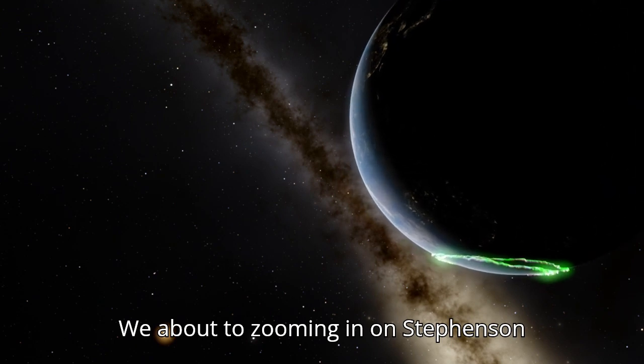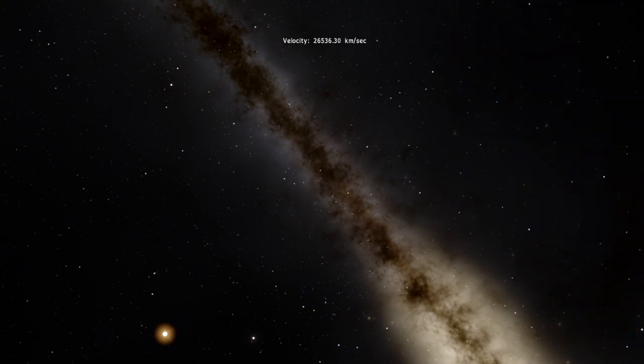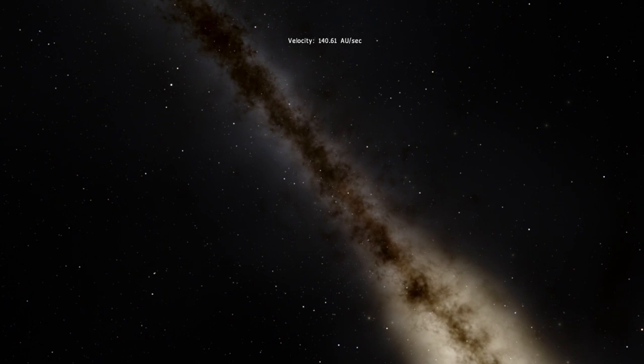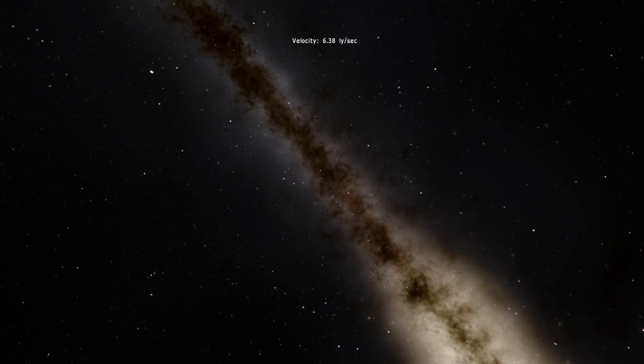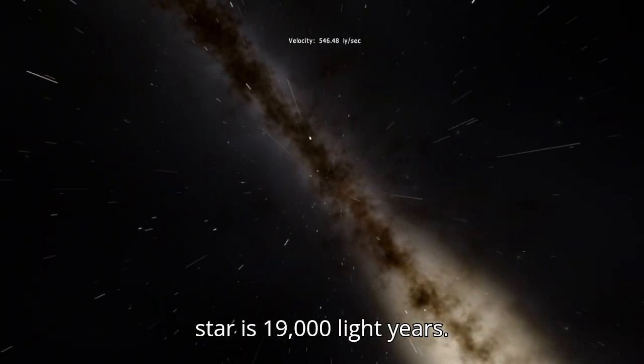We're about to zoom in on Stevenson 218. There are over 100 billion stars in the Milky Way. The distance between Earth and the biggest star is 19,000 light years.